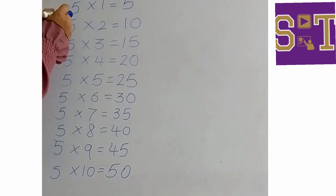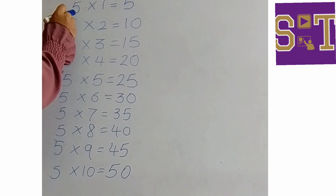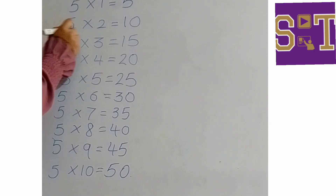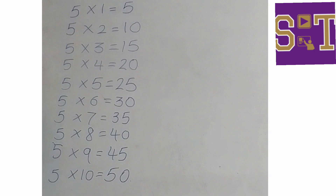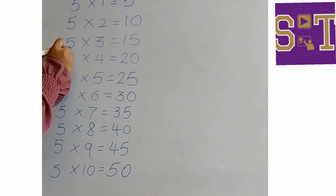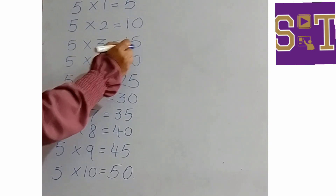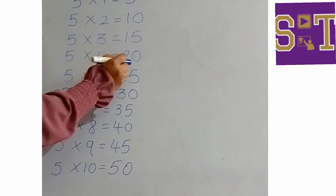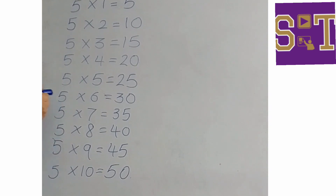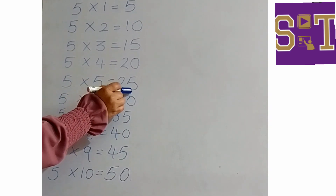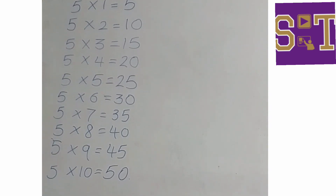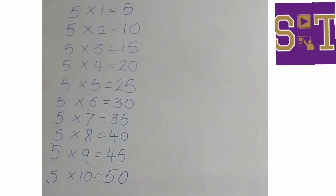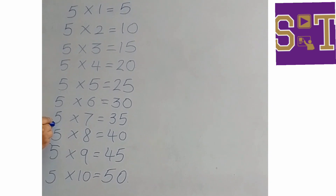Once again, let us see. Five ones are five. Five twos are ten. Five threes are fifteen. Five fours are twenty. Five fives are twenty-five. Five sixes are thirty.